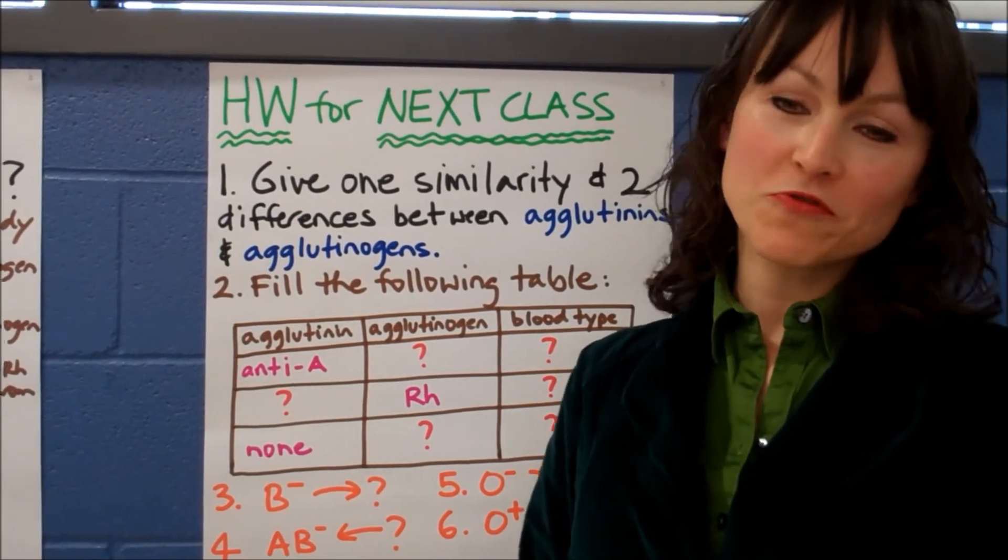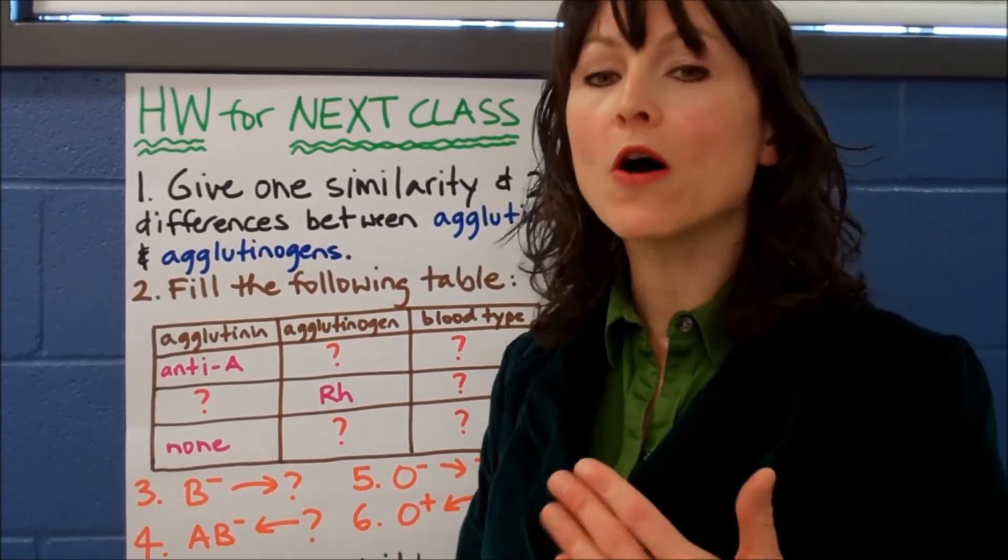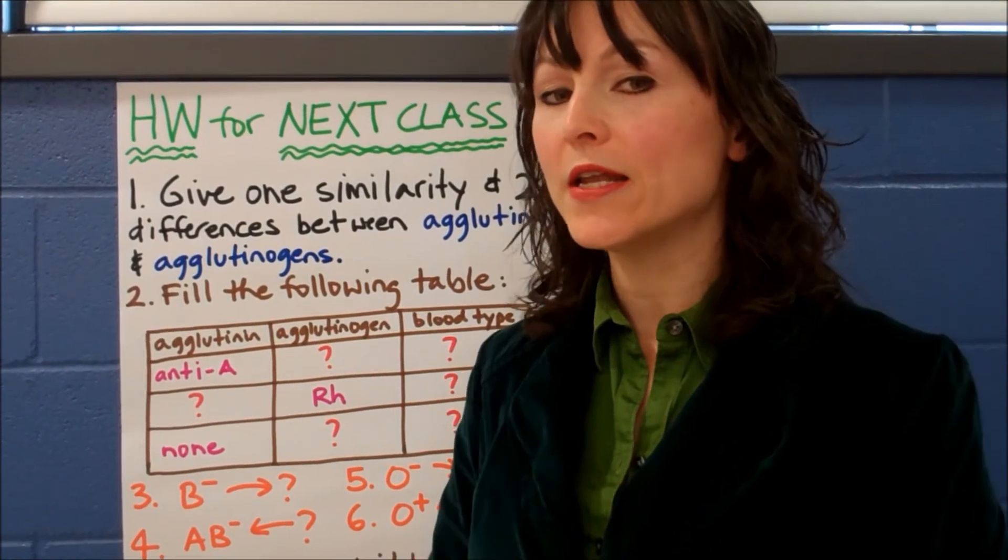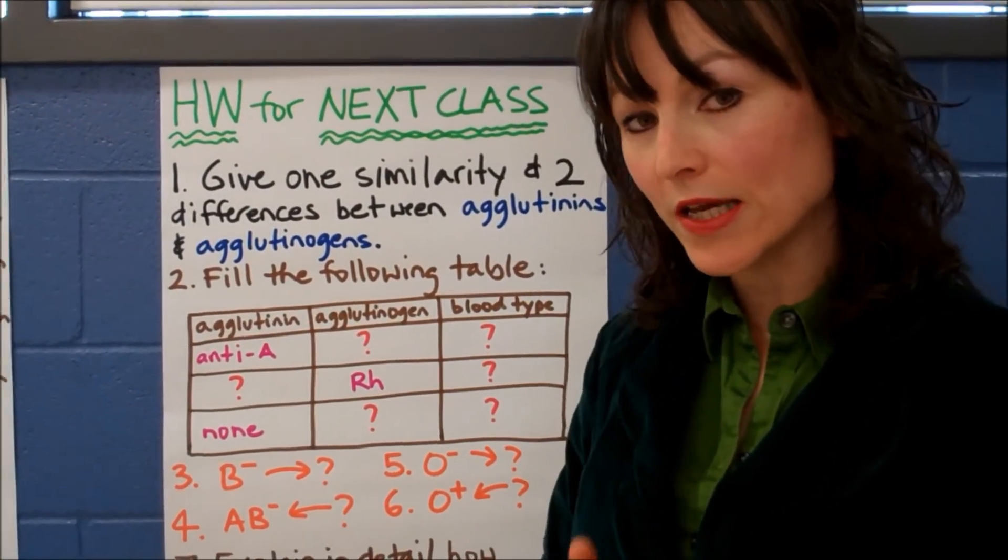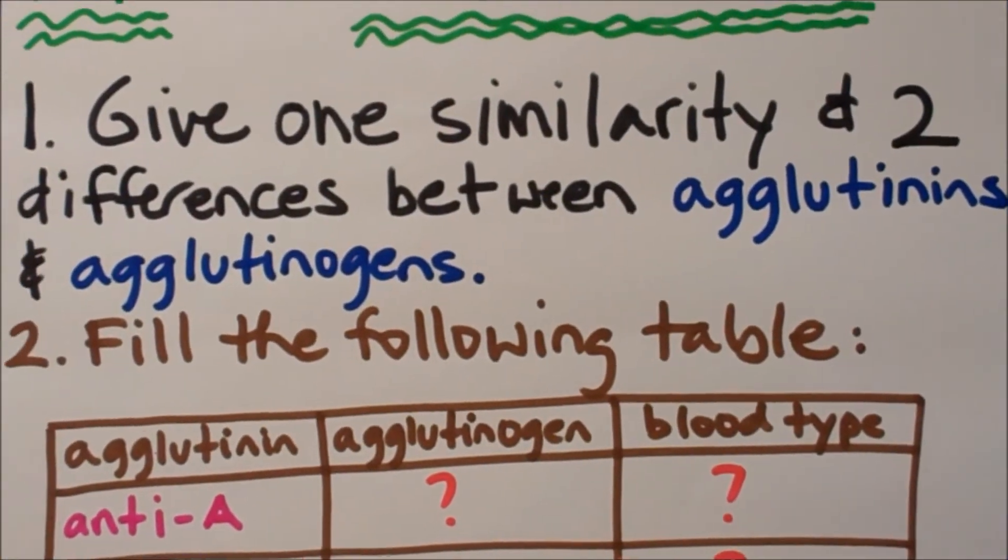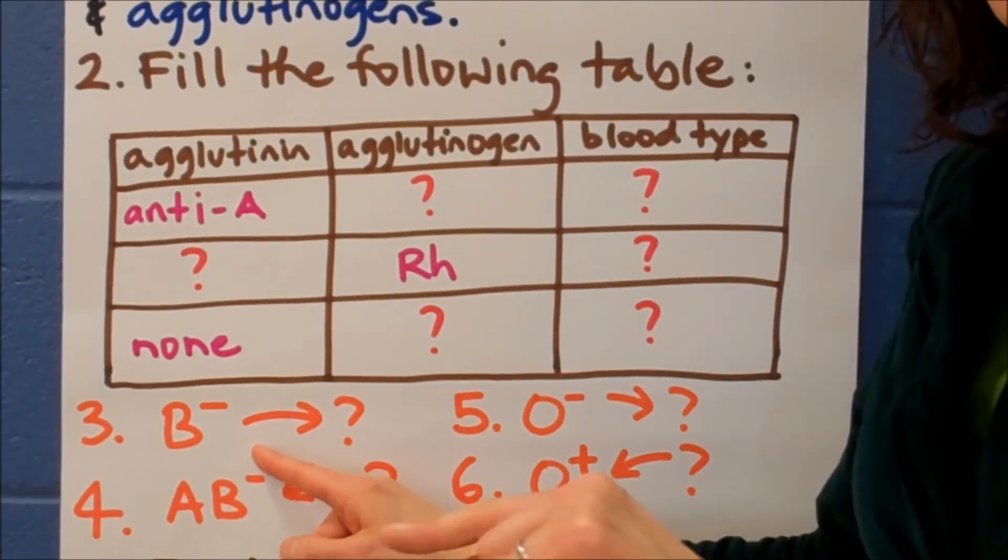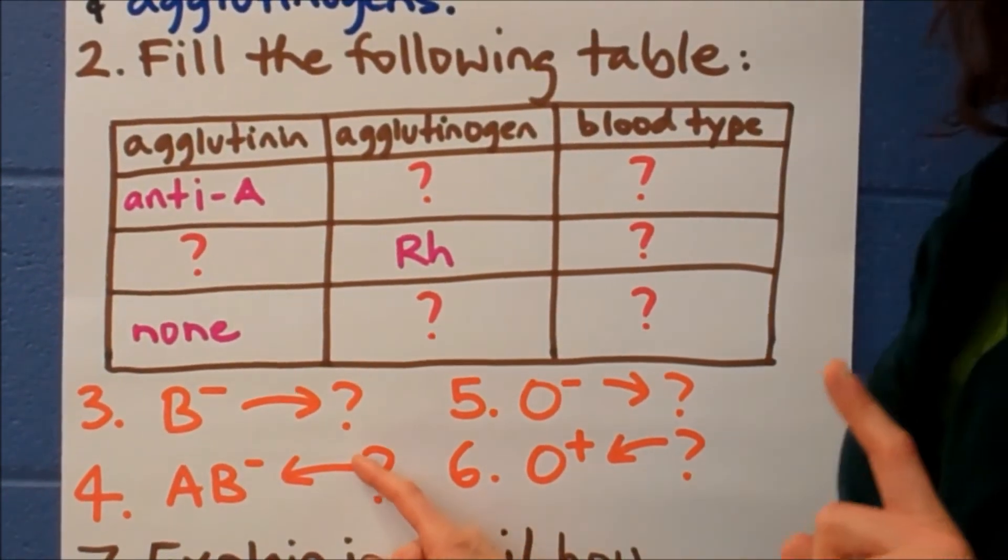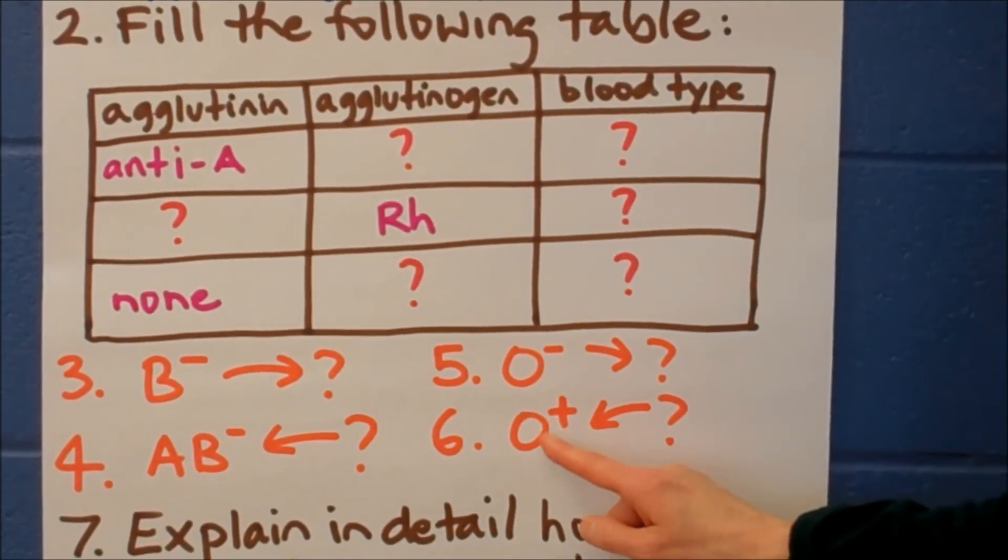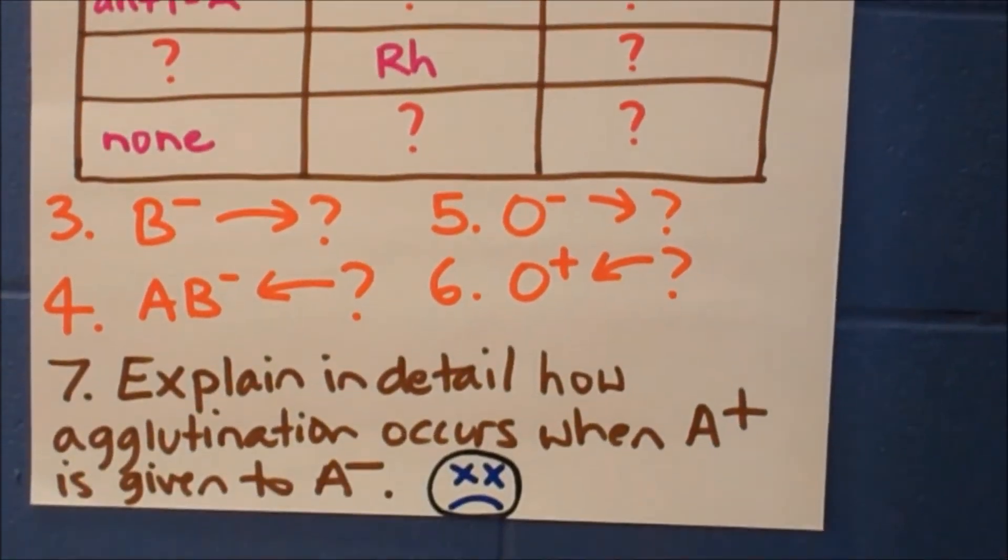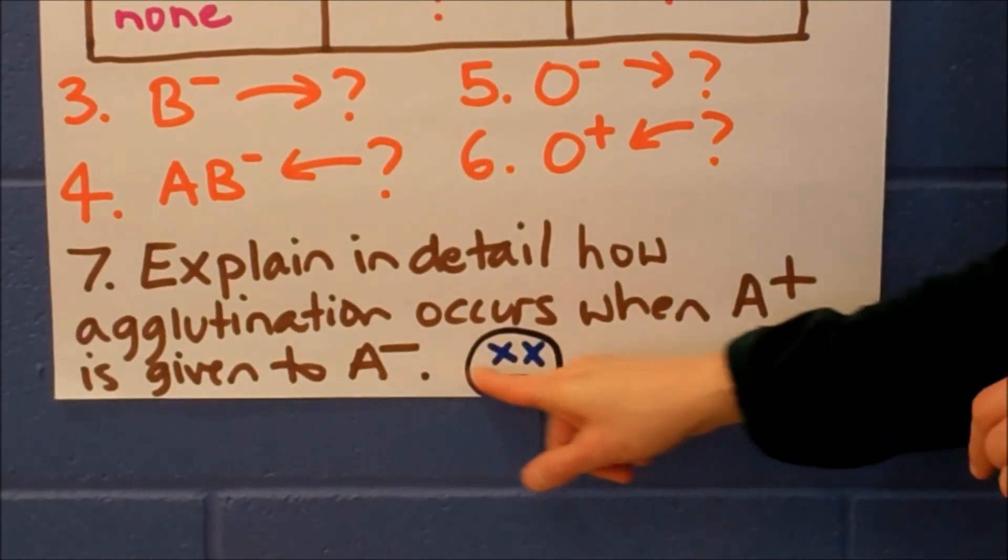Alright. So this is your homework for next class. I'm truly expecting that you'll be able to do well on this. Because you've got the opportunity with this video to pause and look at things again. And to truly get an understanding and a grasp as to how this works. First question: give one similarity and two differences between agglutinogens and agglutinates. Reproduce this table. Fill in where the question marks are. Number three: B negative can give to whom? Number four: AB negative can receive from whom? Five: O negative can give to whom? And six: O positive can receive from whom? Number seven: Explain in detail how agglutination occurs when A positive is given to A negative. Not good.